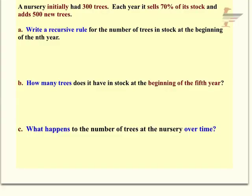This problem is an application to a recursive sequence. It says a nursery initially had 300 trees. Each year it sells 70% of its stock and adds 500 new trees. Part A says write a recursive rule for the number of trees in stock at the beginning of the nth year. Okay, so remind yourself recursive should involve an a sub n minus 1, so your sequence will depend on its previous term.